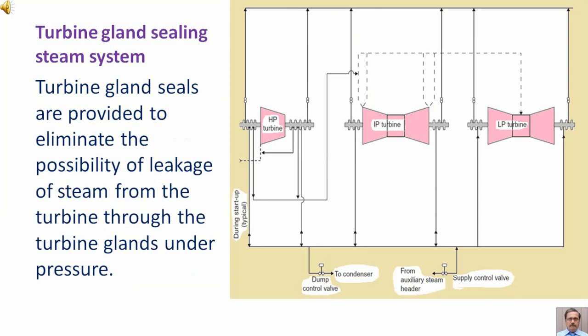Turbine gland seals are provided to eliminate the possibility of leakage of steam from the turbine through the turbine glands under pressure.